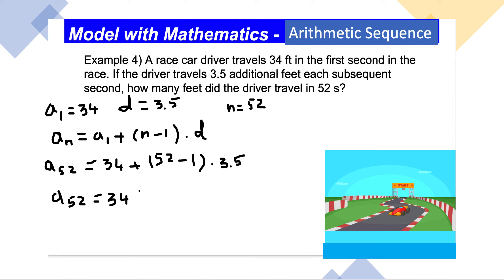So 52 minus 1 is 51, and 51 times 3.5... So a₅₂ is going to equal... we can calculate everything.